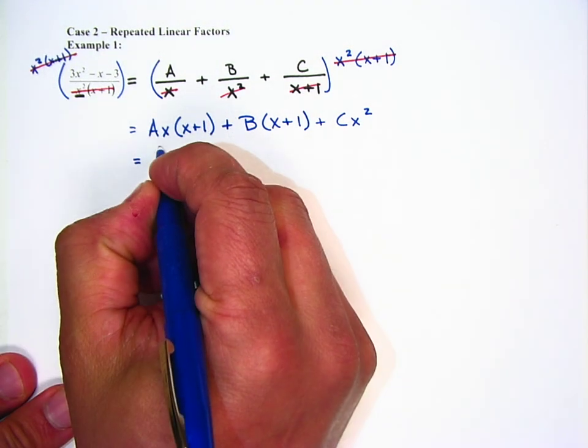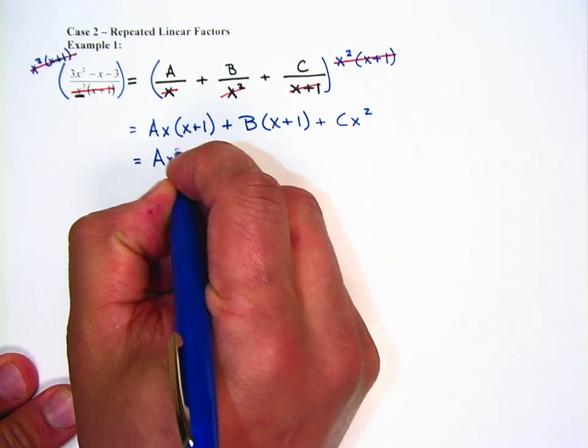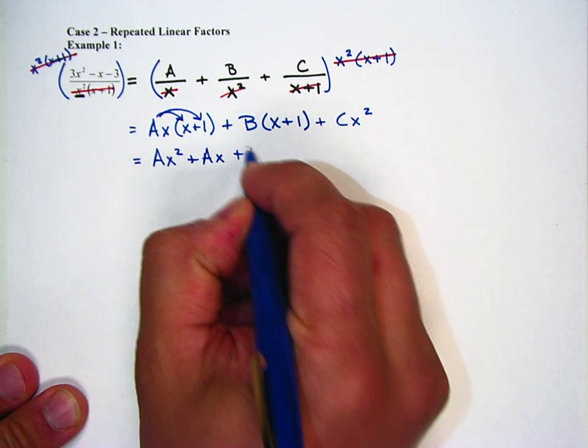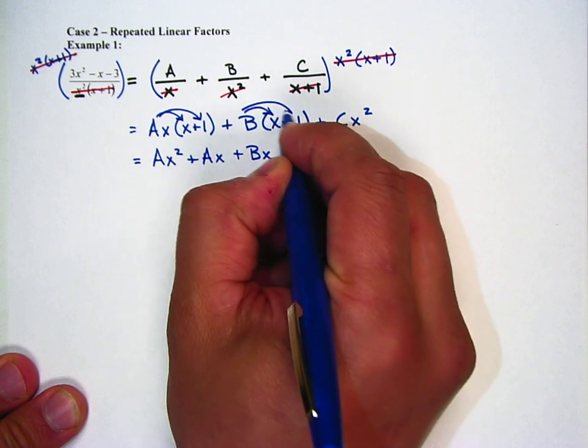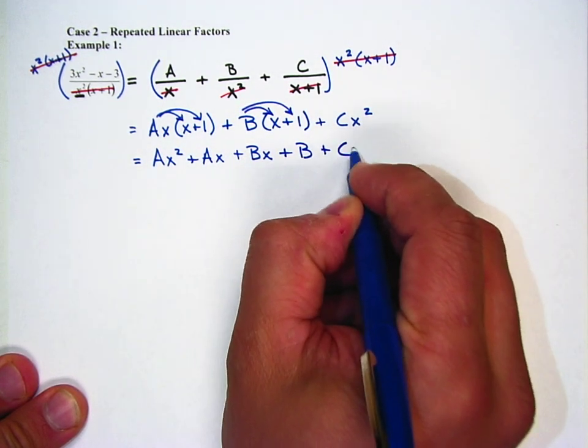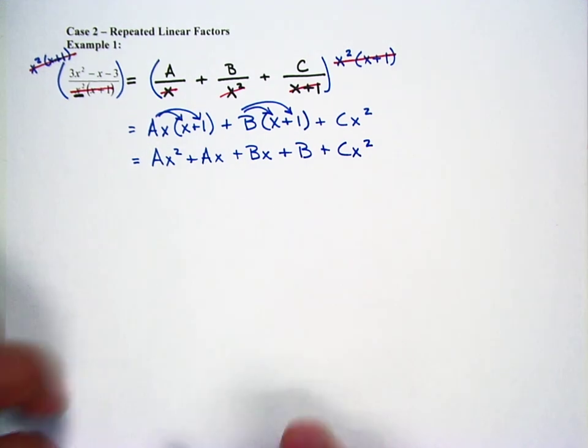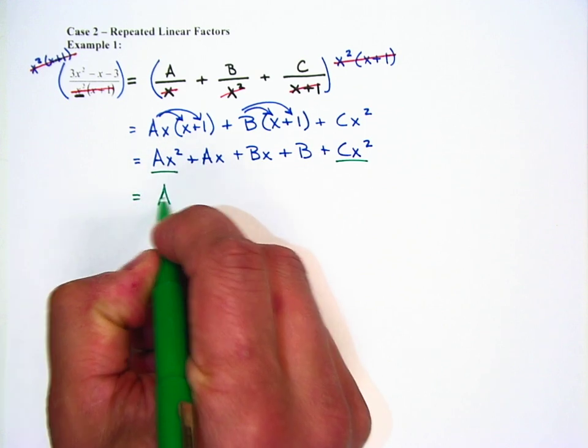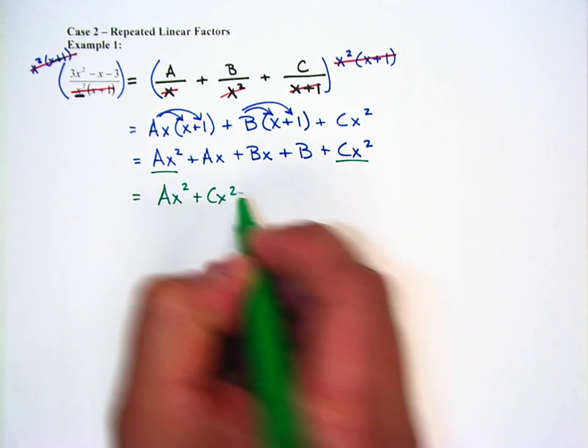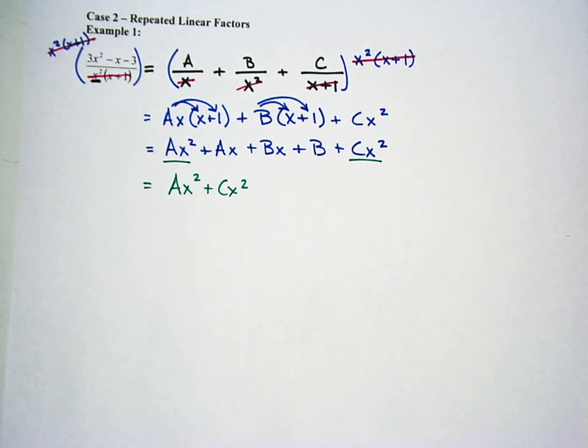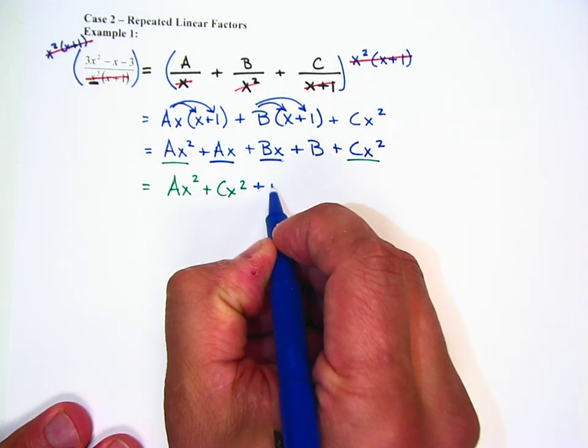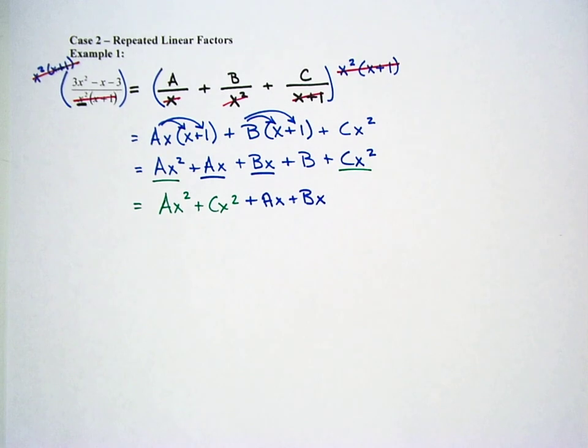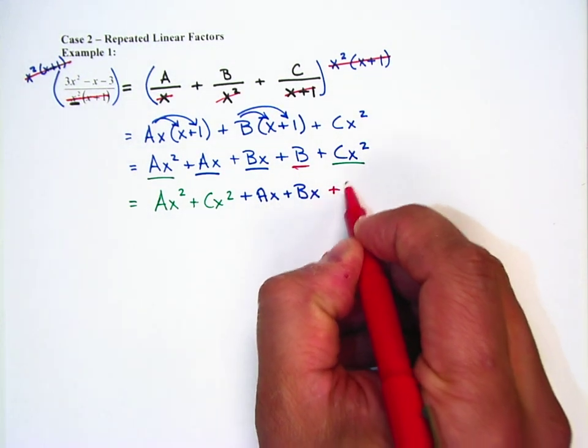So A times x times x is Ax squared. Ax times 1 is Ax. B times x is Bx. B times 1 is B. And then we have Cx squared out there. So looking at our terms, we have Ax squared and Cx squared. So those are my x squared terms. Then I have Ax and Bx. So I'm going to say plus Ax plus Bx. And then finally, I just have this constant term, which is plus B.